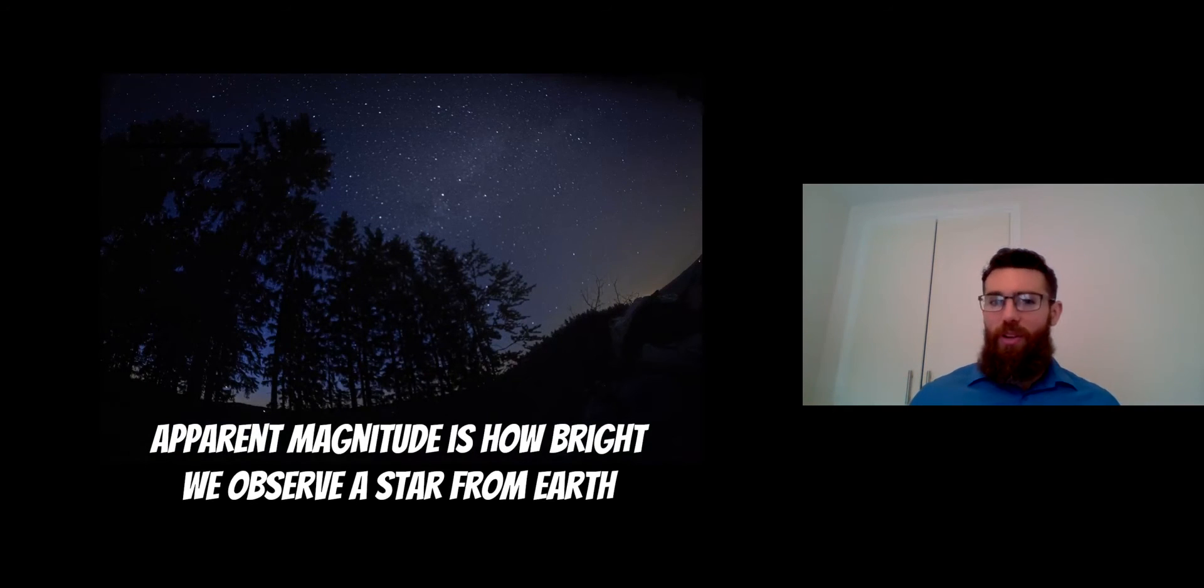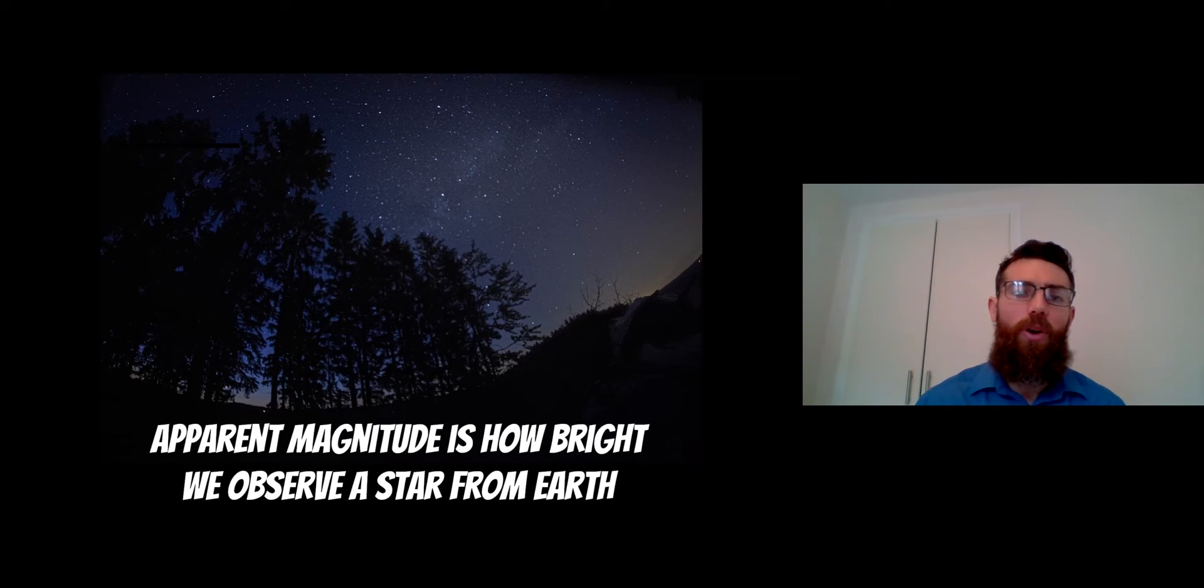When we look into the sky, if you've got nice clear skies, you'll note that not all stars are the same brightness. The apparent magnitude we see in the sky is how bright we perceive it from Earth. When we look into the sky, it's the apparent magnitude that we're actually seeing—how bright it appears to us from Earth.